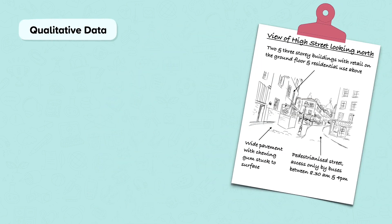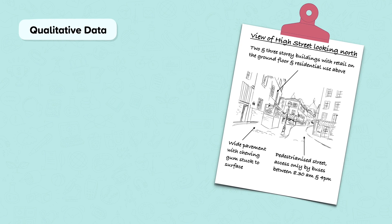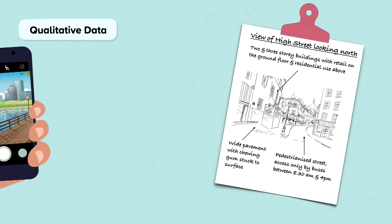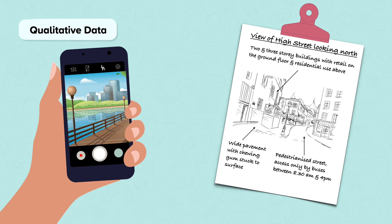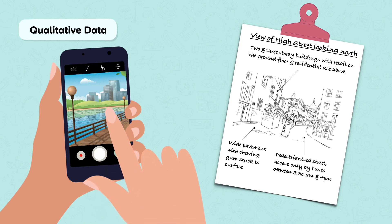Other qualitative methods include field sketches with annotations. Photographs are also very useful and can be annotated later, or even during your visit with the right app.